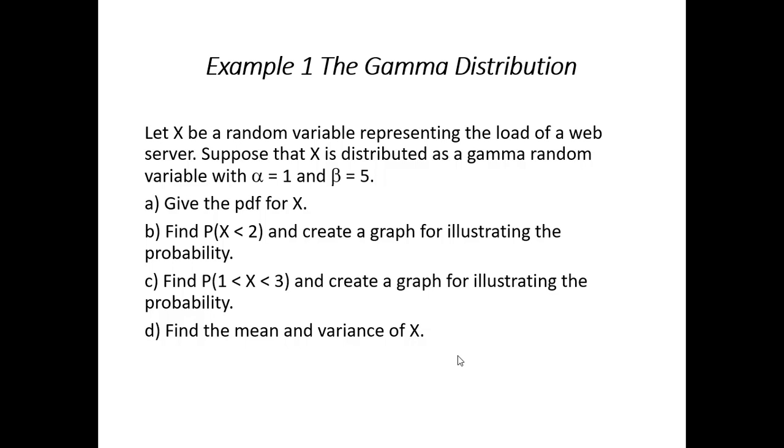All right, for our first example, let's let x be a random variable representing the load of a web server. Suppose that x is distributed as a gamma random variable, and we determine that alpha is equal to 1 and beta is 5. So, here you could see we want to do a few things. Find the PDF, calculate probability x is less than 2 here in part B. The probability x between 1 and 3 in part C. And for both of these, we're interested in creating a graph that would illustrate the probability. And then, finally, we'll find the mean and the variance of x.